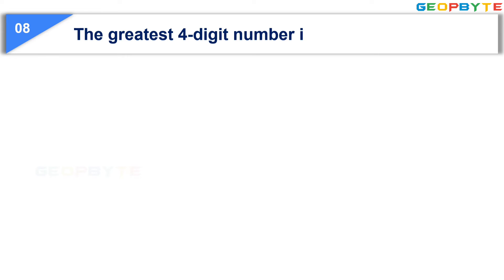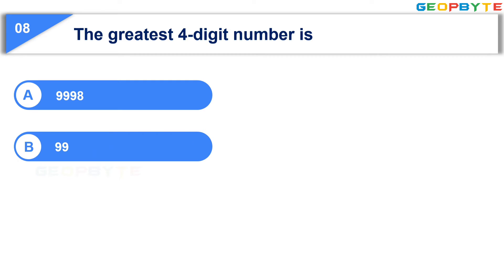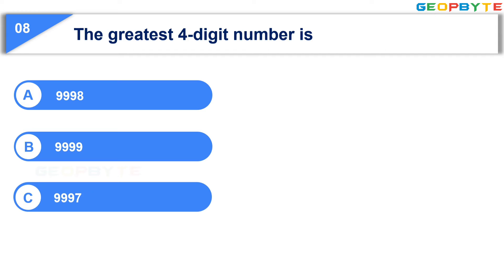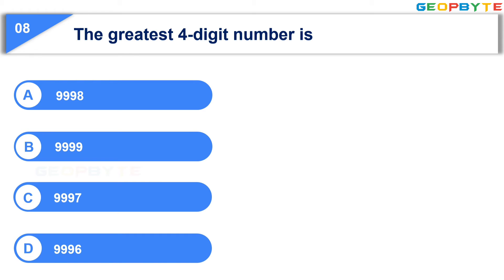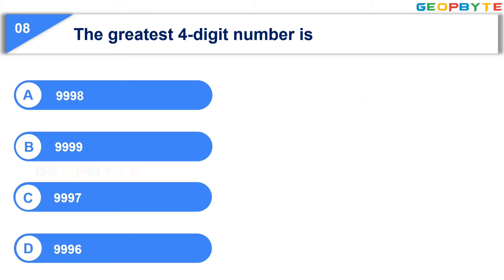Moving to the next question. The greatest 4-digit number is — Option A: 9998, Option B: 9999, Option C: 9999, Option D: 9996. Your time starts now. Your time is up and the correct answer is Option B: 9999.